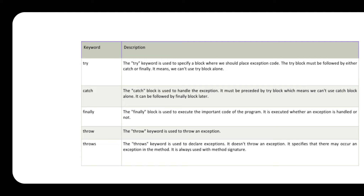When the try block intercepts an exception, that information is sent to the catch statement. The catch block displays that there is a problem. Together, try and catch work as follows: try checks for the exception, and catch takes an appropriate decision for handling it.